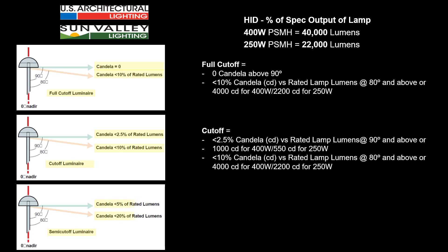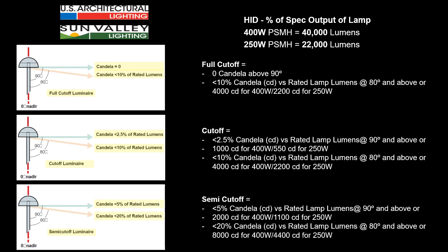In the case of a semi-cutoff luminaire, even more light is allowed into other zones: 5% above 90 degrees and 20% in the 80 to 90 degree zone. The 20% in the 80 to 90 degree zone can be useful to create vertical illumination on objects moving through the illuminated field, so it's not necessarily a bad thing. However, it does become more difficult to restrict the light to only the job site itself, as light in the 80 to 90 degree zone can go off-site.